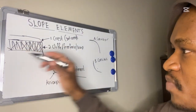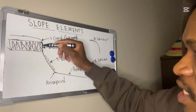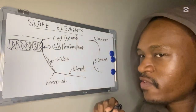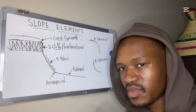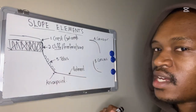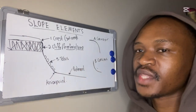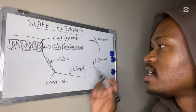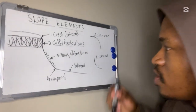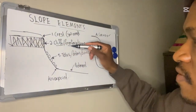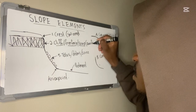The second slope element is the cliff — an almost vertical, bare rock face. The cliff has alternative names: you can call it the cliff, the free face slope, or the scarp slope. So the second slope element has three names. The main geomorphological process that takes place at the cliff, free face, or scarp is rock falls.